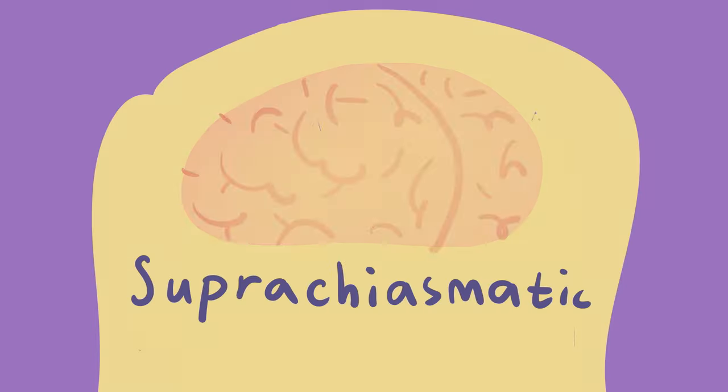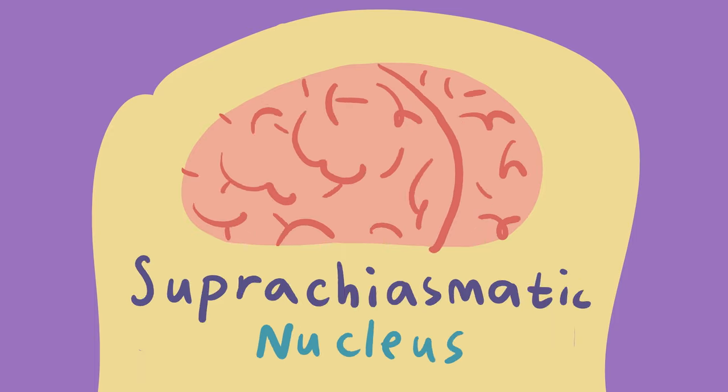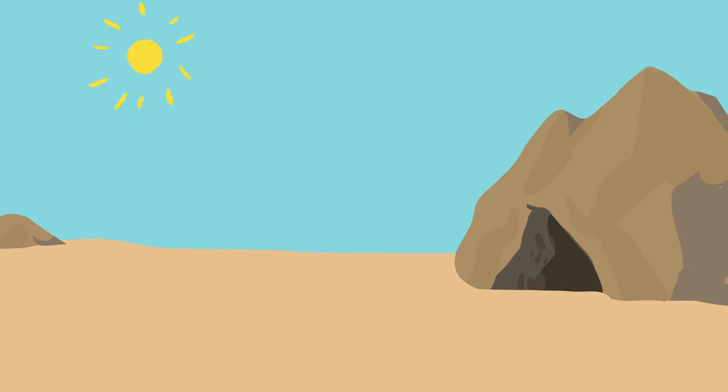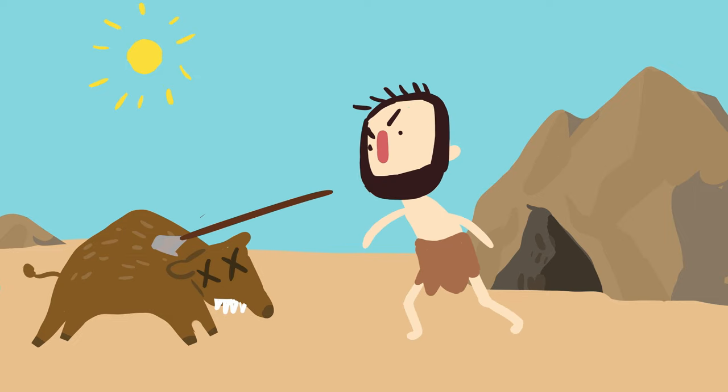So why is this? Well, it's thanks to a part of your brain called the suprachiasmatic nucleus, but for you and me, let's call it the body clock. Humans evolved to do stuff in the day, like hunting mammoth, cleaning the cave, or making a spreadsheet.